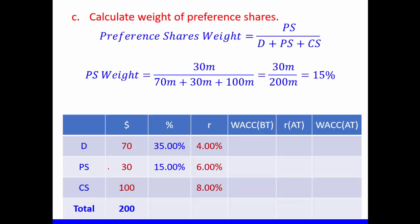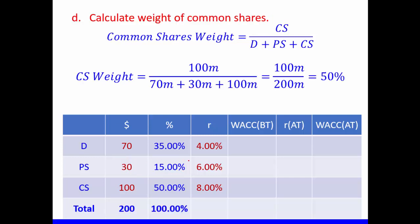Calculate the weight of preference shares: the preference share amount divided by the total — 30 divided by 200 — gives us 15%. Next, calculate the weight of common shares or ordinary shares: the amount of common shares divided by the total — 100 divided by 200 — gives us 50%.